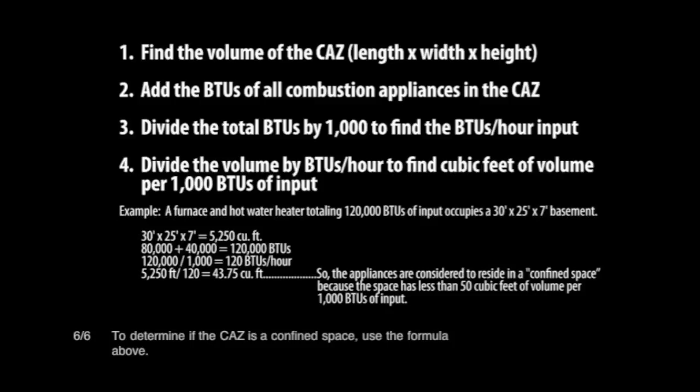For example, a furnace and hot water heater totaling 120,000 BTUs of input occupies a 30-foot by 25-foot by 7-foot basement. 30 × 25 × 7 equals 5,250 cubic feet. 80,000 plus 40,000 equals 120,000 BTUs. 120,000 divided by 1,000 equals 120 BTUs per hour. 5,250 divided by 120 equals 43.75 cubic feet. In this case, the appliances are considered to reside in a confined space, because the space does not have 50 cubic feet of volume per 1,000 BTUs of input.